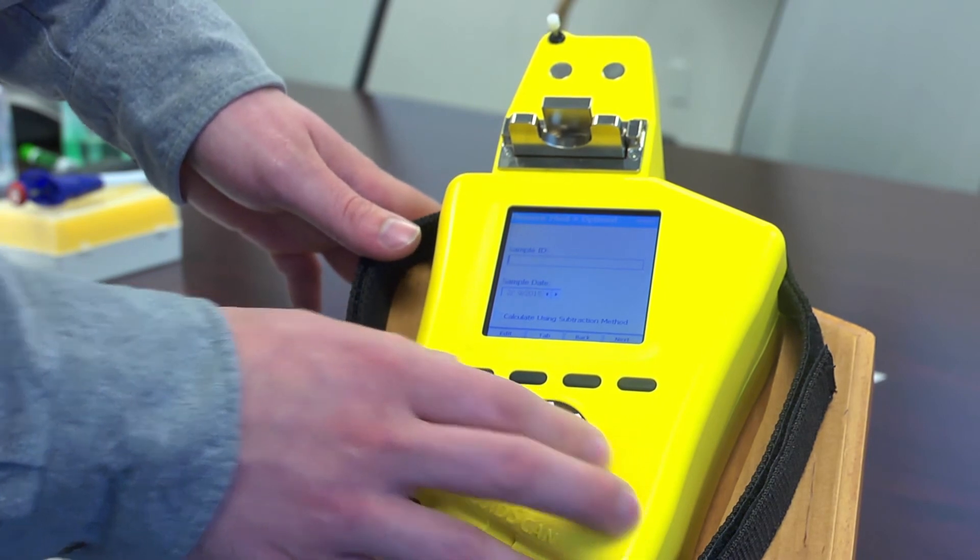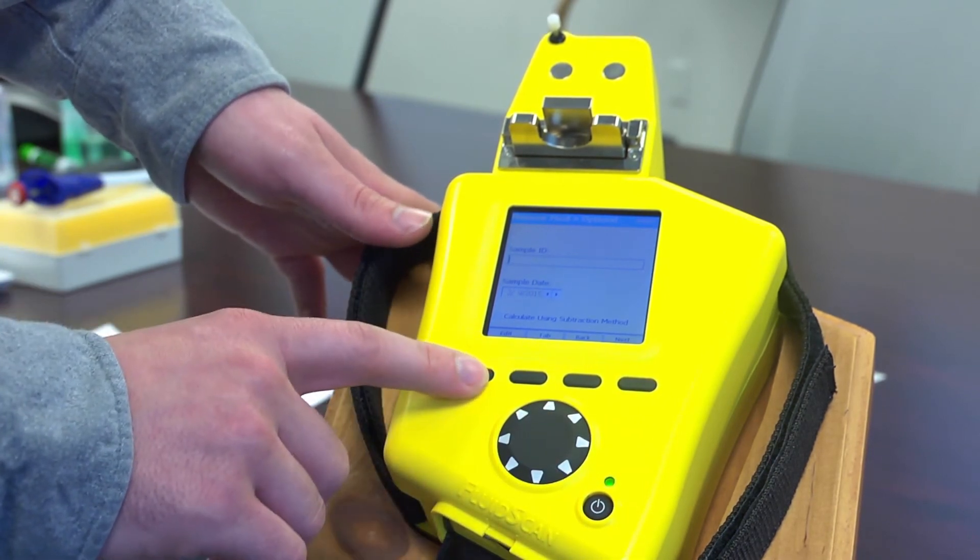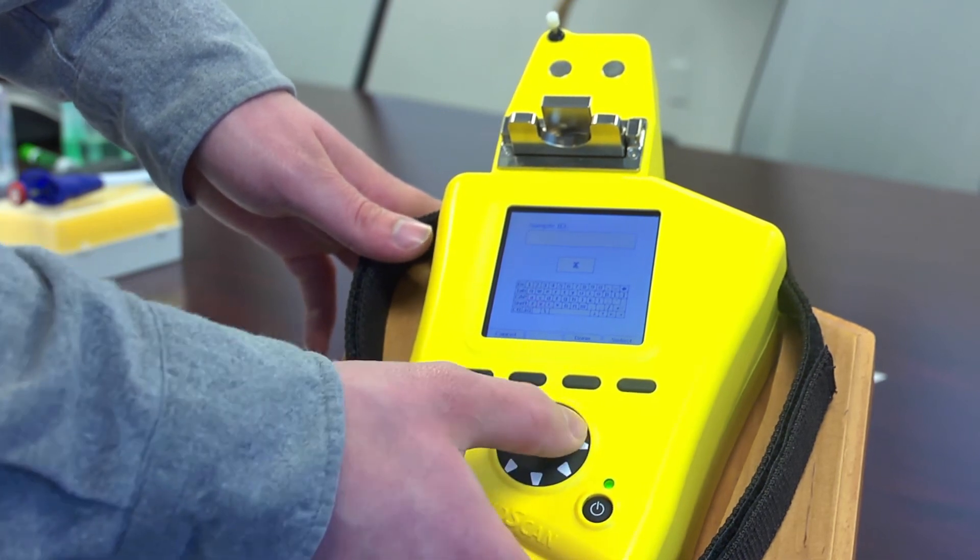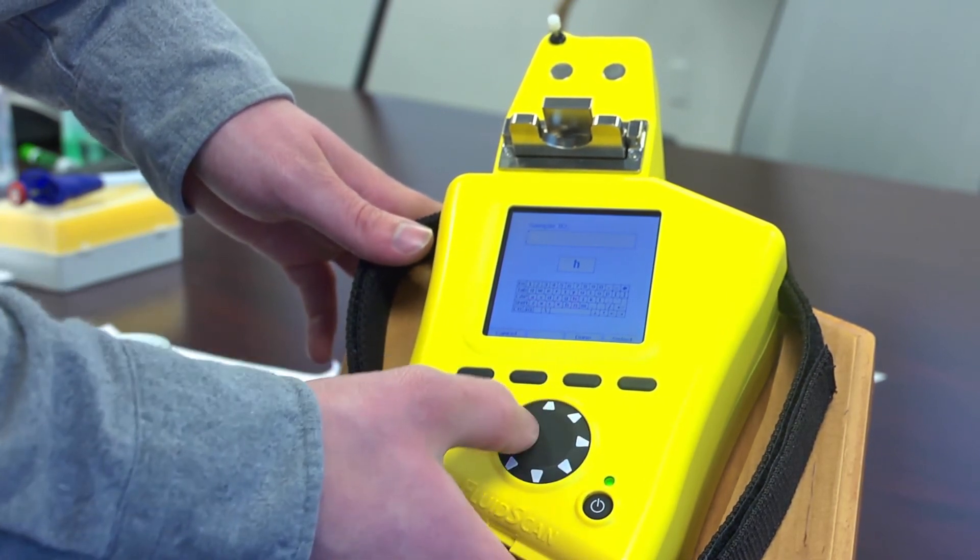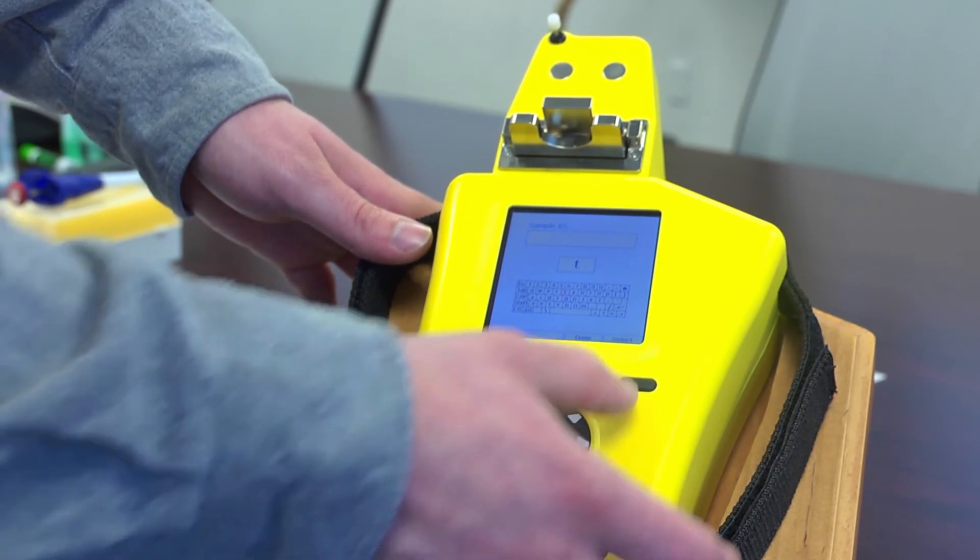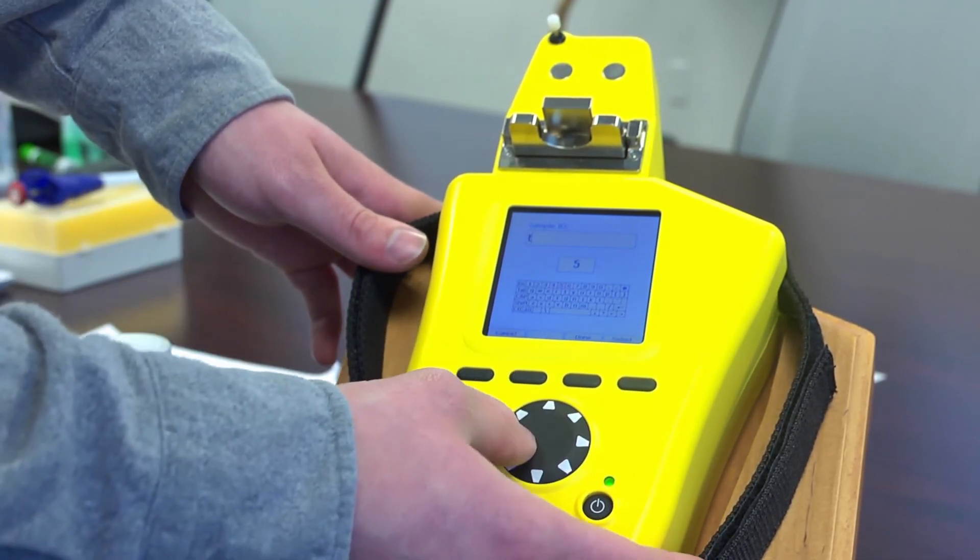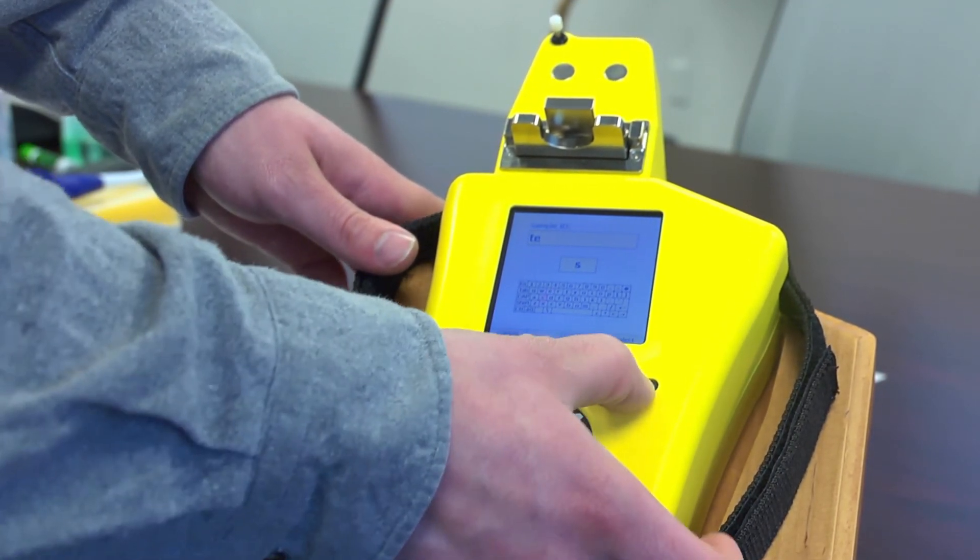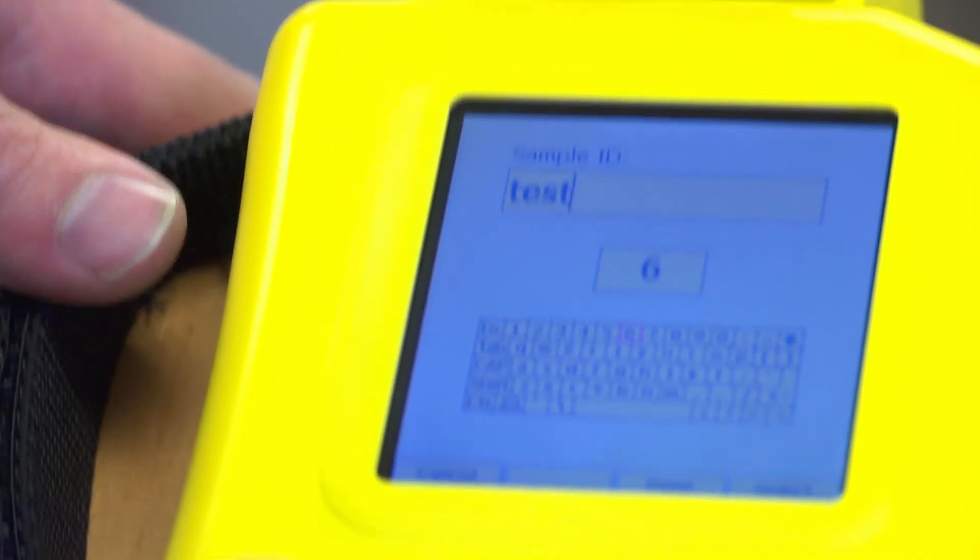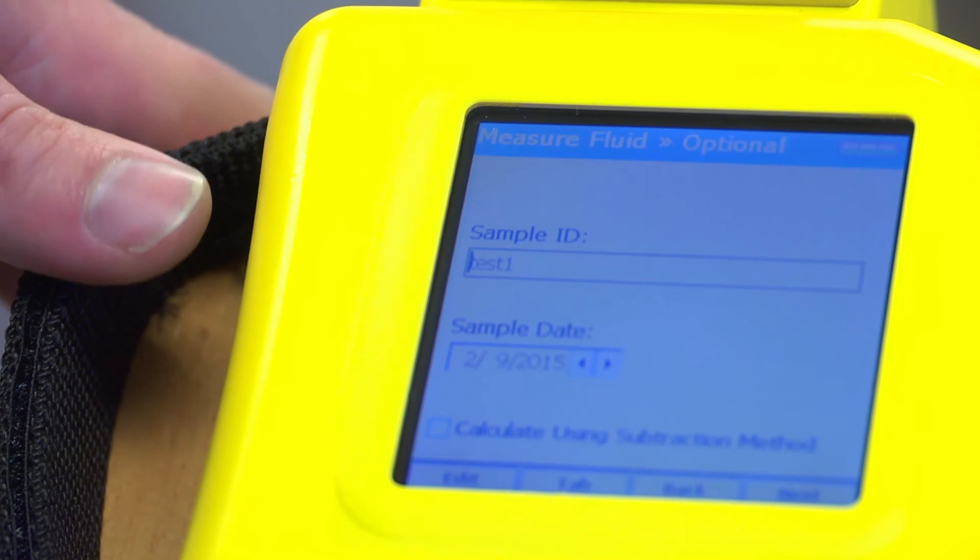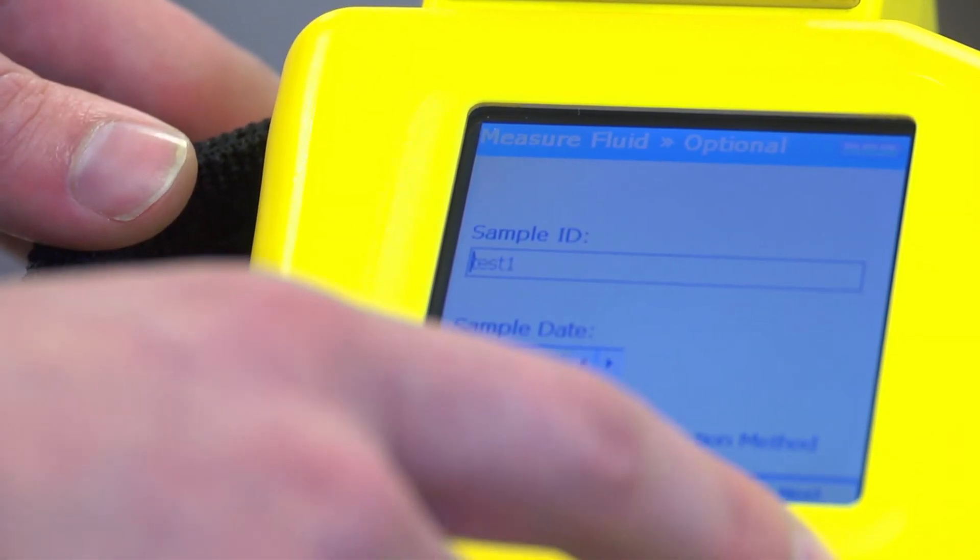You have the option of putting in sample ID by hitting the edit button and then using the push keys to move to select exactly what you want to put in, which today we say test 1. Then we hit next.